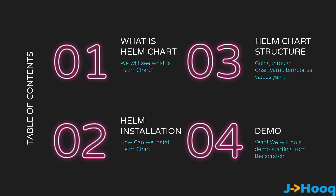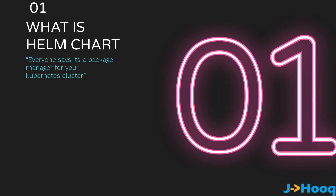I have divided this session into four parts. The first one is: what is Helm Chart. In the second part we are going to see the installation of Helm Chart. In the third part we are going to see the structure — how the chart.yml, templates, and values.yml look. And the fourth one, which is my favorite, is the demo where we are going to create a demo chart application and deploy it inside a Kubernetes cluster.